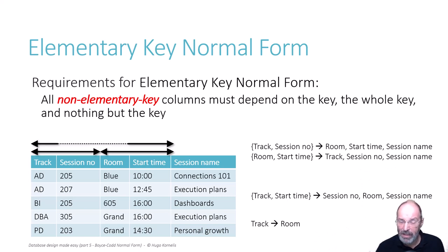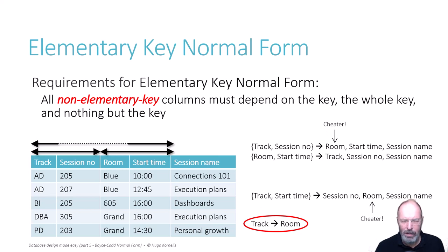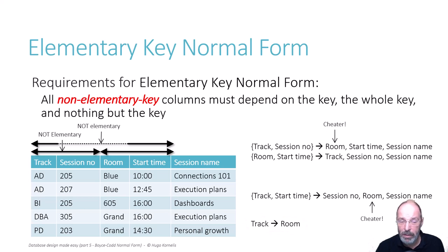Because track determines room, we see that there are two cheater functional dependencies. The functional dependency track and session number determines room, which is implemented by the key, is a cheater — because track by itself determines the room. The same goes for the key on track and start time, which also implements a cheater functional dependency. So those two keys are both not elementary. However, the key on room and start time only implements non-cheater functional dependencies — all of those are very real functional dependencies, with no cheating going on. So the key on room and start time is an elementary key.